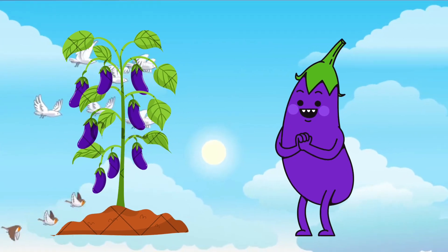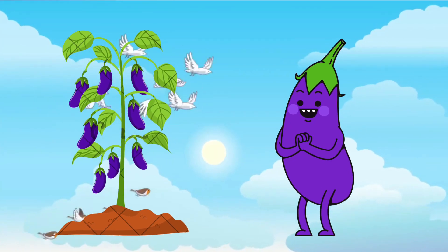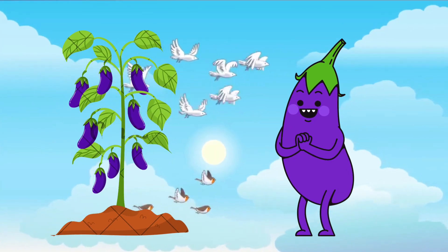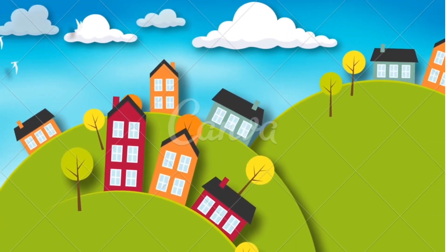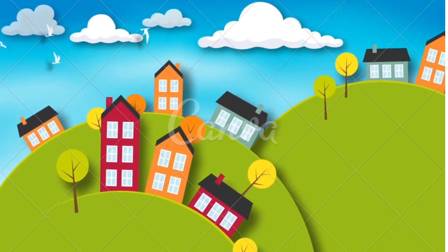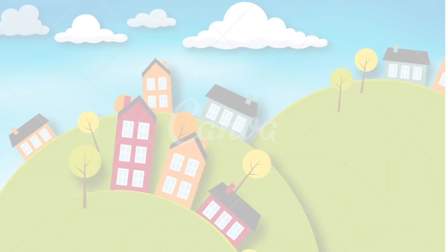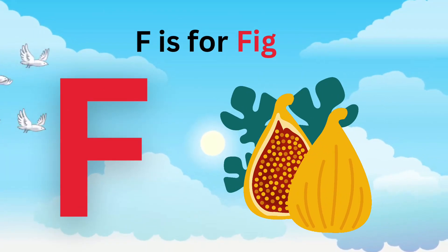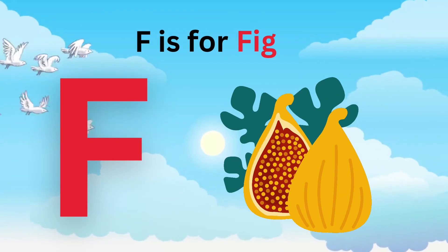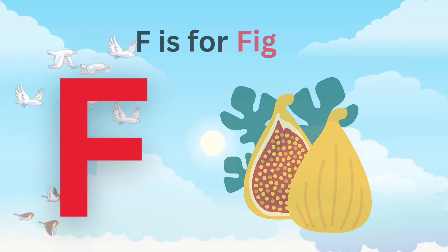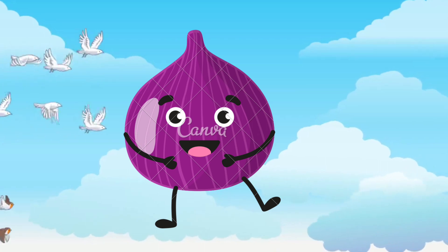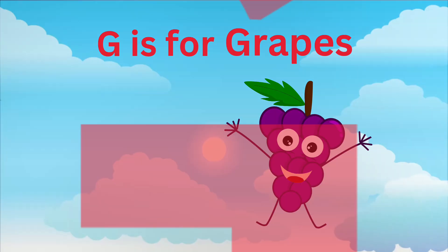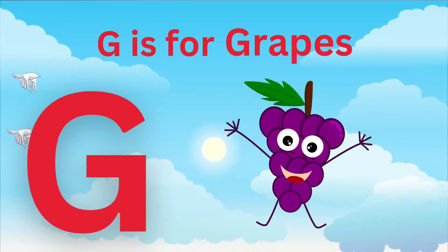E is for Egg fruit. E, E, Egg fruit. E is for Egg fruit. E, E, Egg. F is for Fig. P, P, Fig. F is for Fig. P, P, P.